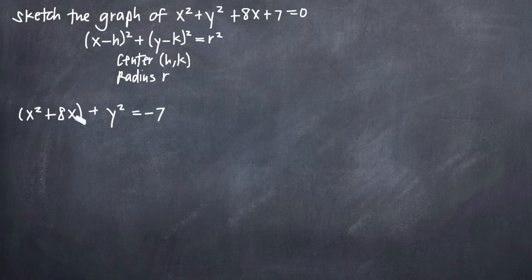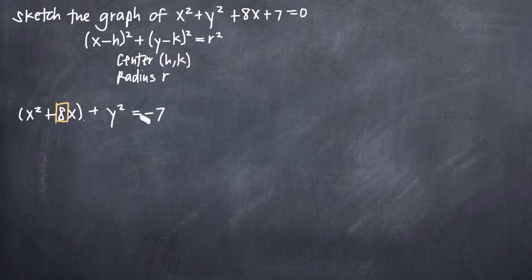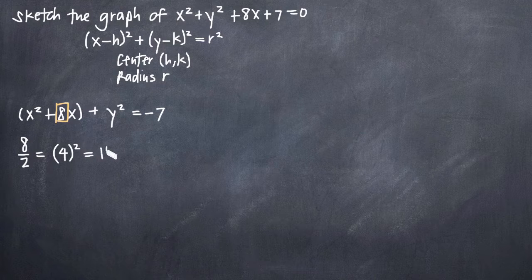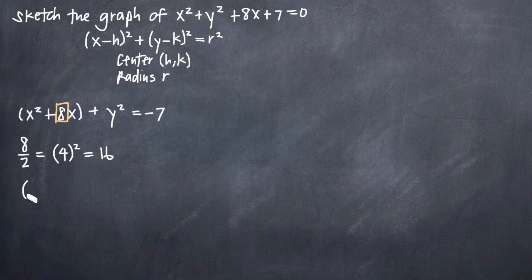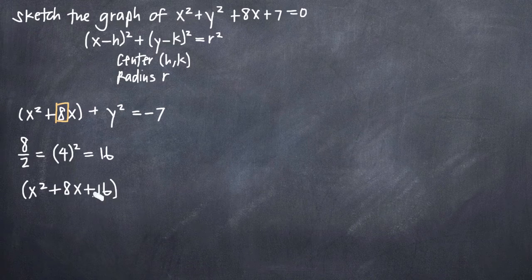When we have an equation like this with both a left and right-hand side, we complete the square as follows. With respect to x, we take the coefficient on the first-degree x term — that's 8 — divide by 2 to get 4, and then square it to get 16. So 16 is the value we add to x squared plus 8x to complete the square. But adding it to the left-hand side requires adding it to the right-hand side as well.